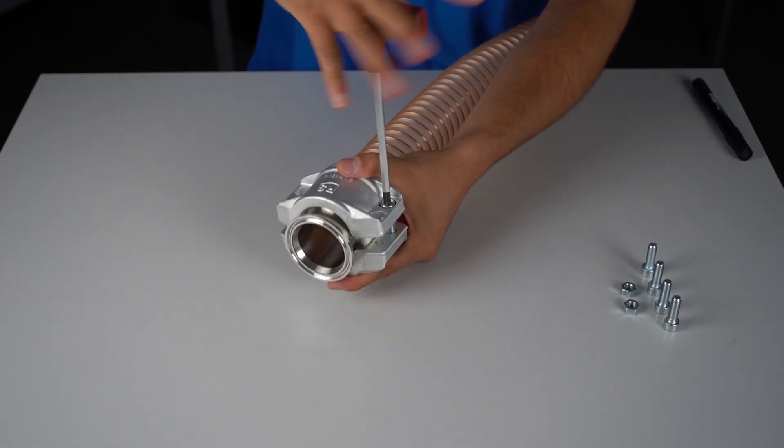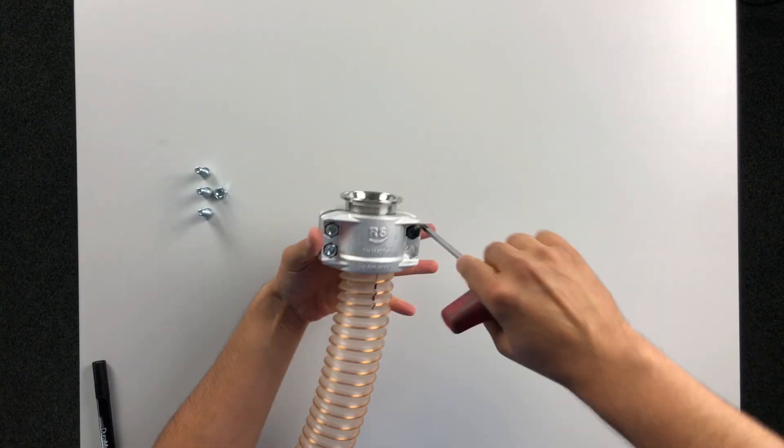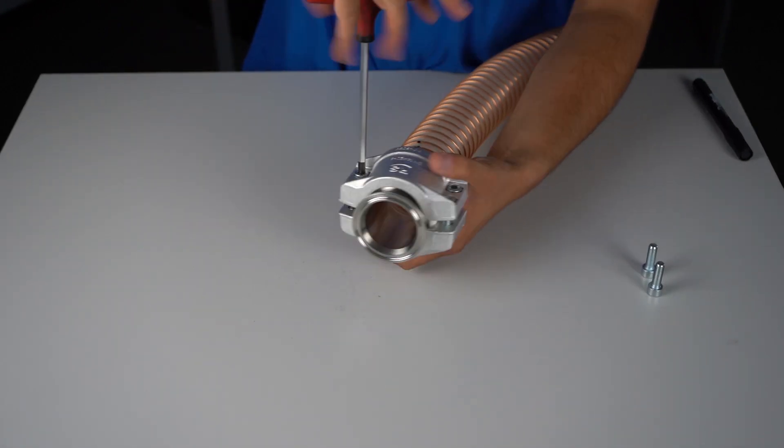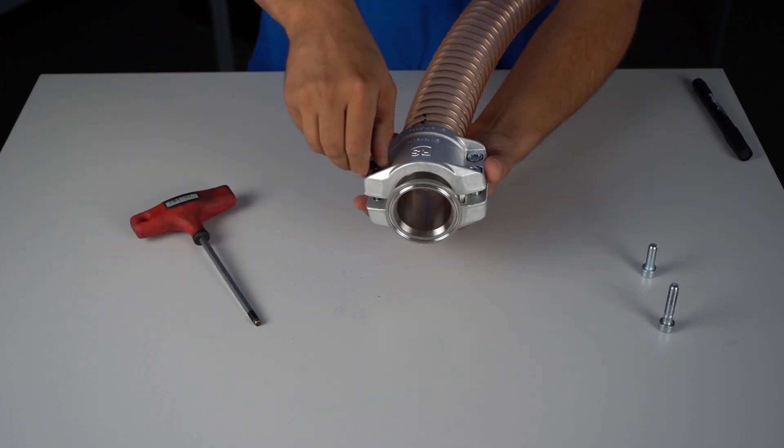Tighten the screws up to a gap of 2.3 mm between the clamp shells and ensure a parallel and equal space on both sides.